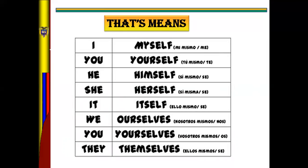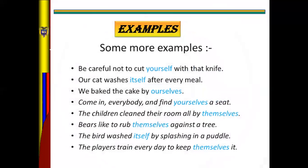Recordemos que cada uno de estos pronombres reflexivos se traducen como: mi mismo, tú misma, él mismo, ella misma, esto mismo, nosotros mismos, ustedes mismos, y ellos mismos. Eso es lo que traduce en sí cada una de estos pronombres reflexivos. Simply we are remembering this. So look at this example.